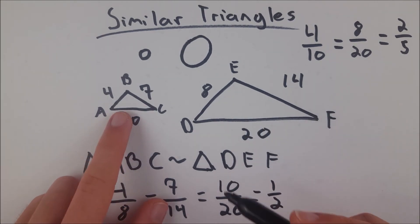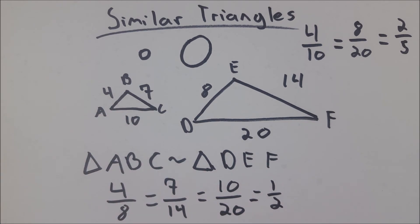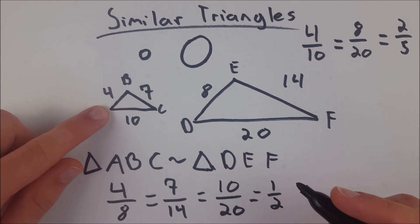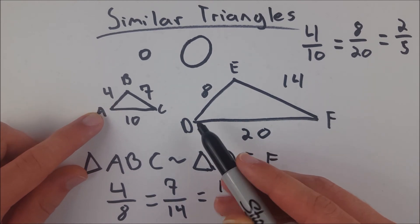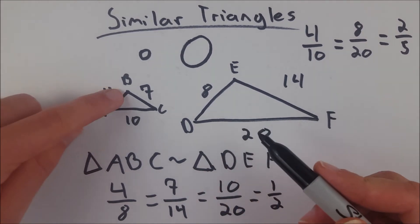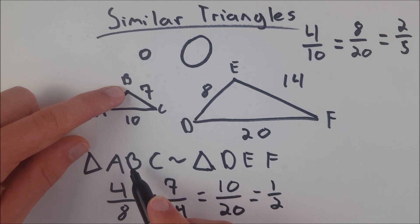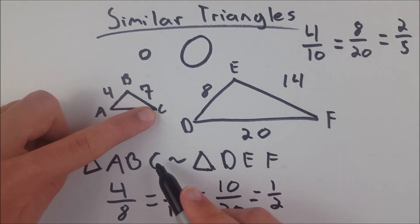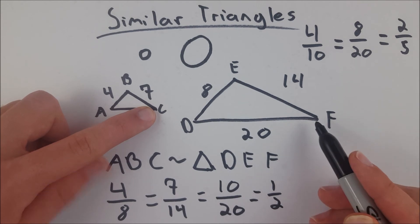However, their angles are always congruent. Their corresponding angles, I should say. So, the angle at vertex A is congruent to the angle at vertex D. The angle at vertex B is congruent to the angle at vertex E. And the angle at vertex C is congruent to the angle at vertex F.